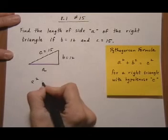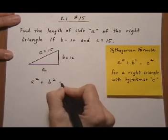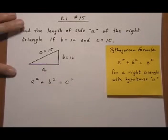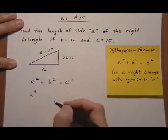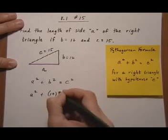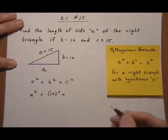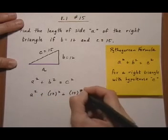So we're going to use the Pythagorean formula and fill it in with what we know, and then we'll solve for the unknown A. So A squared plus B squared would be 12 squared equals C squared, which would be 15 squared.